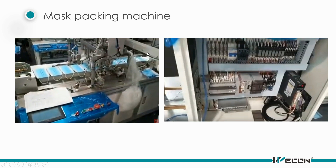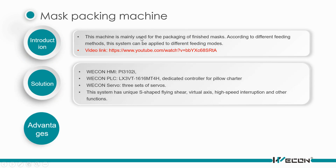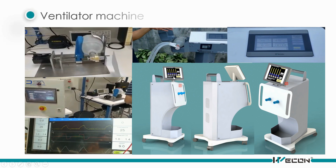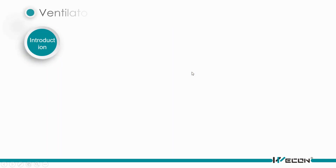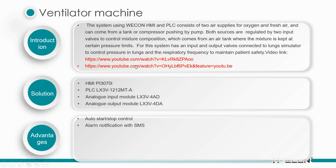Here are some pictures of the mask packaging machine. It is used for packing finished masks according to different feeding methods, and the system can be applied to different feeding modes. There is a YouTube link you can check. Here are also some pictures of the ventilator machine, with a YouTube link attached as well.